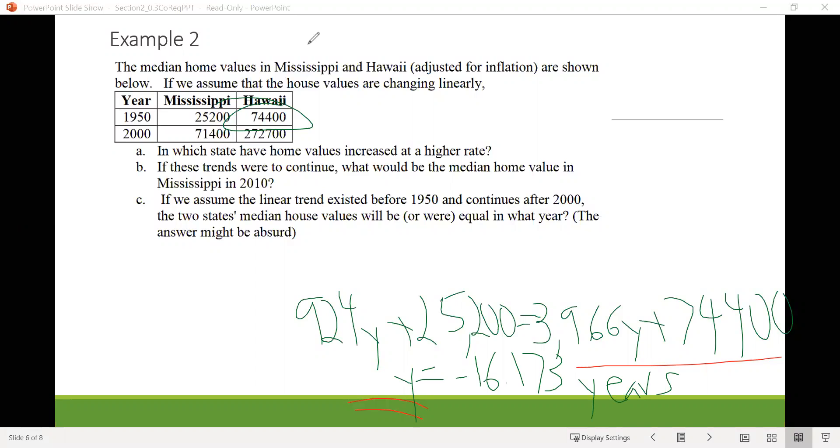Hold up. Negative years, how did we get that? And why does that make any sense? Well, first of all, notice that when we started this thing in 1950, who had the higher home values? Well, Hawaii did. And in 2000, who has the higher home values? Well, Hawaii still does. So it looks like from 1950 to 2000, the home values of Hawaii were always higher than the home values for Mississippi.